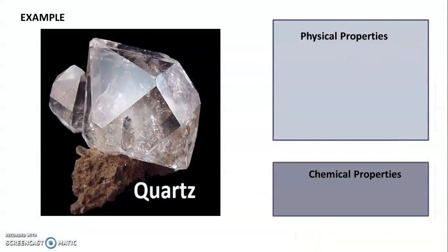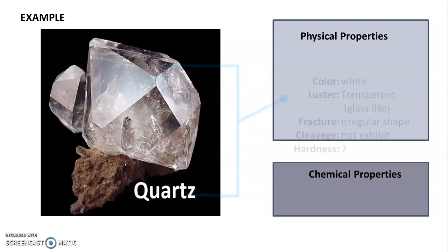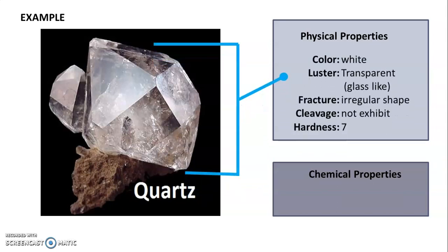The number 10 is the hardest kind of mineral — an example is diamond. Let us describe the properties of this sample specimen: the physical and chemical properties of quartz. For physical properties: color is white, luster is transparent, fracture is irregular shape, cleavage is not exhibited, and hardness has a resistance rate of 7. The chemical property of quartz: the main component is silicate.